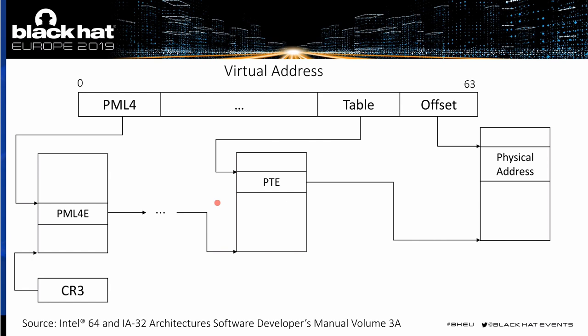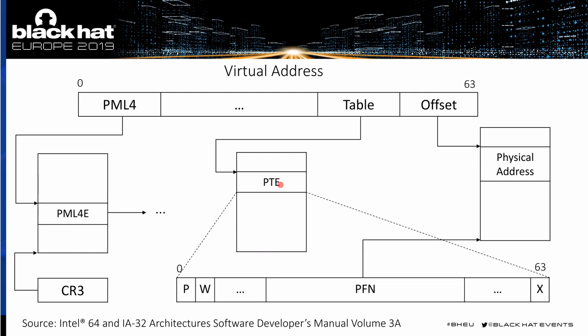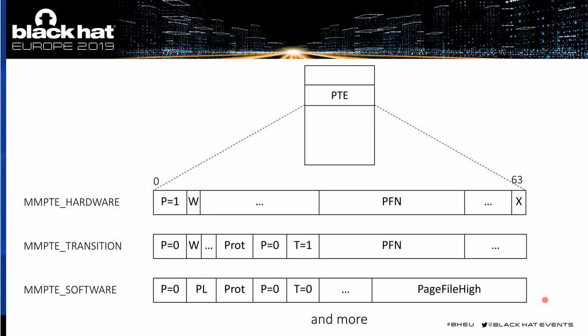The translation process from a virtual address to a physical one traverses some paging structures, ending up at the page table and that particular page table entry, which points to a physical page. A PTE looks something like this — we have some bit flags, the PFN field pointing to the physical address, and then an NX bit. This bit says whether or not the CPU is allowed to fetch instructions from this page.